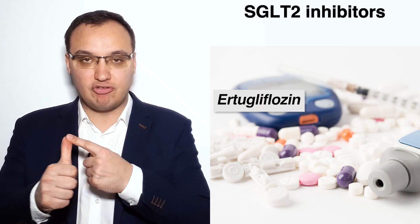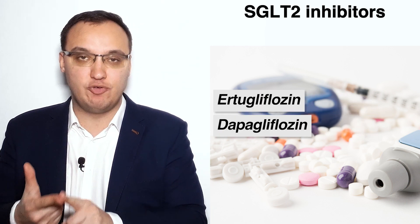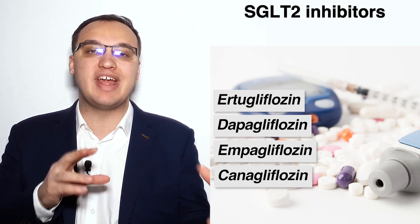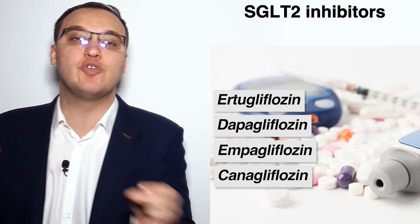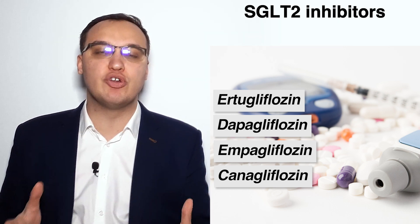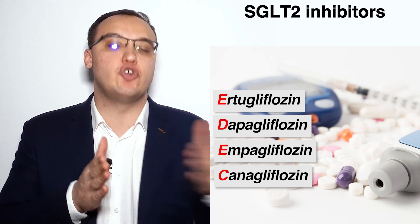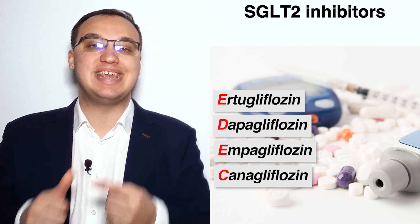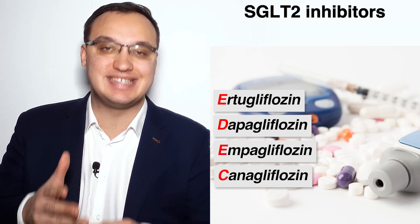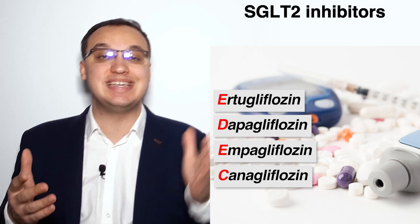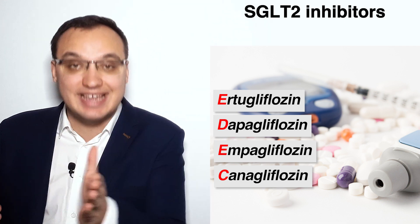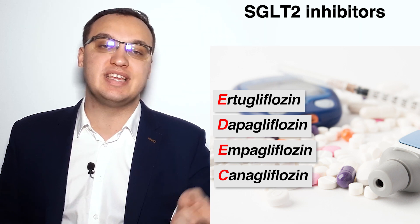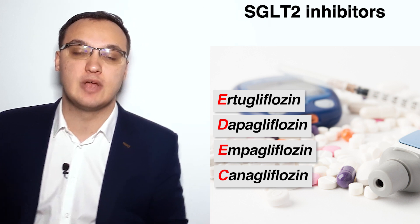The four types are: ertugliflozin, dapagliflozin, empagliflozin, and canagliflozin. All are ending with -gliflozin. Let's create a mnemonic from the first letters of these SGLT2 inhibitors — let's use EDEC. The reason for choosing EDEC is because this is the order of decreasing kidney insufficiency values.